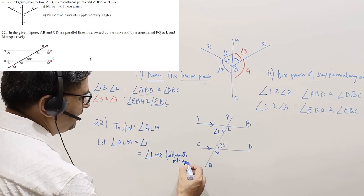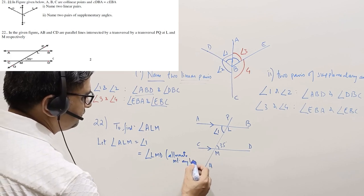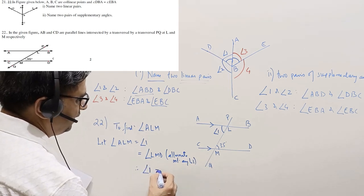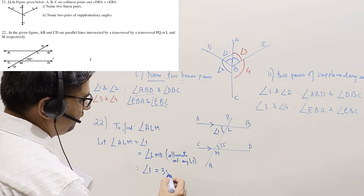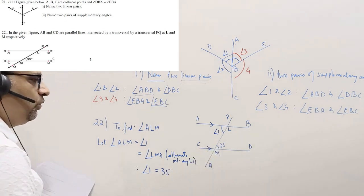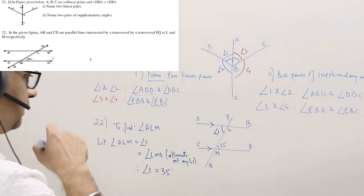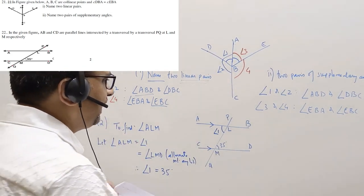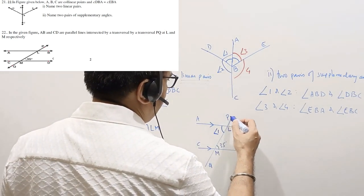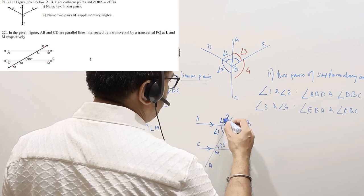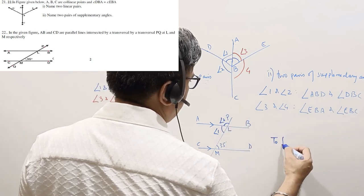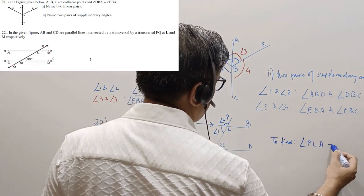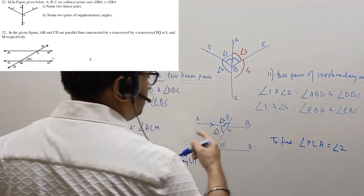Alternate interior angles. Therefore, angle 1 is equal to 35 degrees. These two angles are equal, so if this is 35, this is also 35. Now the next thing to find is angle PLA. Let's call it angle 2. We are also required to find angle PLA which we have named as angle 2.